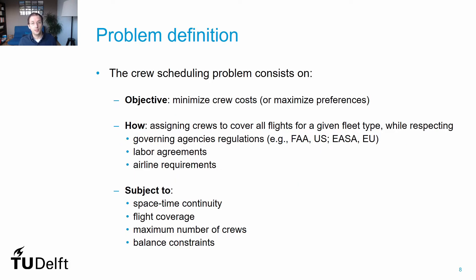The goal of the crew scheduling problem is to assign the required crew to perform all flights in our schedule. For cockpit crew especially, we can formulate each flight type or family in separated problems. The objective is to minimize the crew costs, or if they are almost fixed, to maximize crew preferences, while respecting regulations set by aviation governing agencies or the airline itself, and by respecting labor agreements. The solution should also respect the maximum number of crews available in each airport and the space-time continuity of the schedules generated for each crew member.